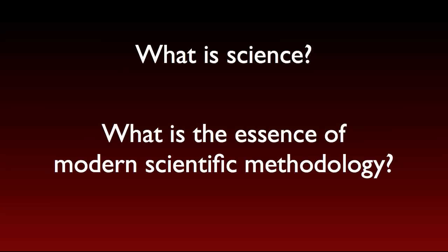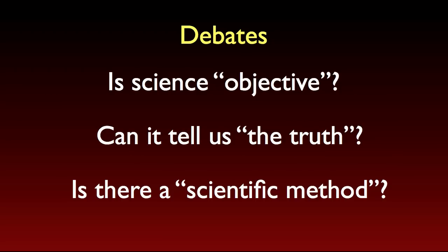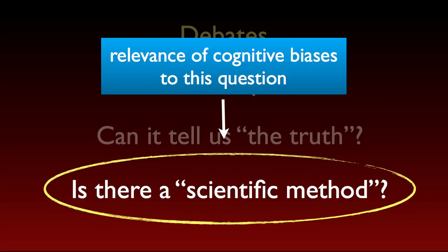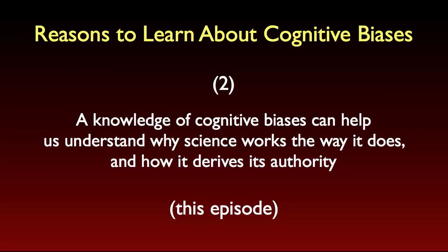If you're familiar with the philosophy of science literature or the science studies literature, then you know there's a lot of debate about these questions — like, is science objective? What reason do we have to think that science gives us a more accurate picture of the world than any other worldview or belief system? And is there even such a thing as the scientific method? I don't presume to settle these big questions in a podcast episode. At some point in the future, I'll do a whole course in the Critical Thinker Academy on philosophy of science issues. But my goals for this episode are much less ambitious. I want to focus on the relevance of cognitive biases for this question and what this means for the authority of science.